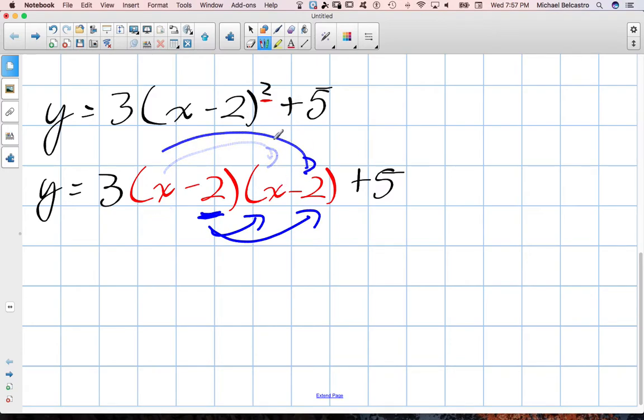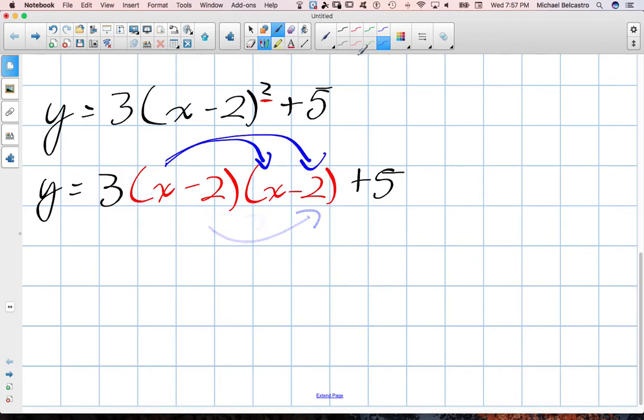There's a thing called FOIL, which you'll learn later. Sometimes it's called rainbow method. But a simple way to do it is just take an arrow and make sure you multiply this by both, and you multiply this one by both, okay? So when we go to do that, and we're going to leave the other things black because it just means they're staying the same in terms of colors. Our first thing here, X times X. Well, X times X is going to be X squared, okay? So we've done X and X.